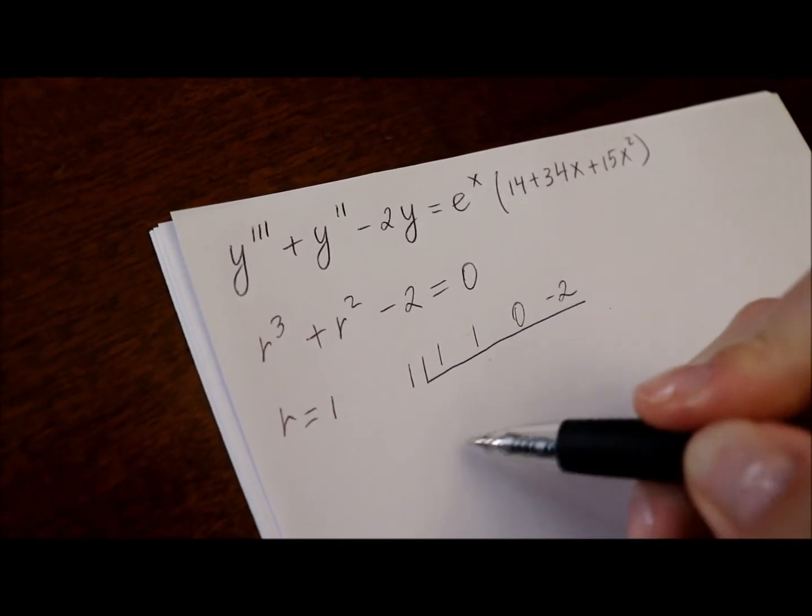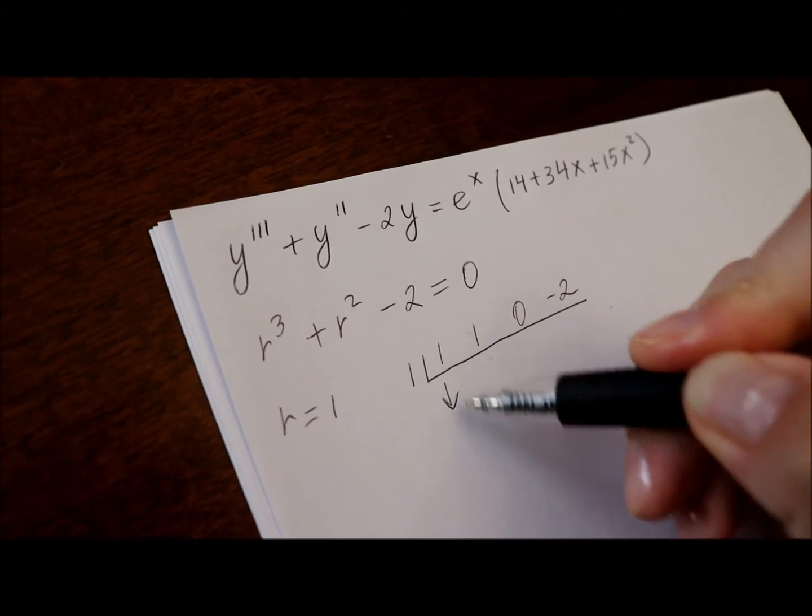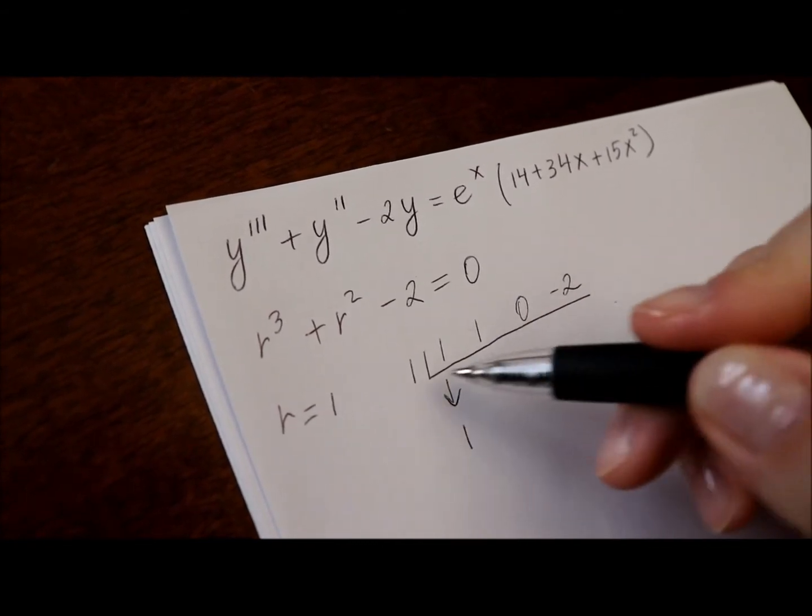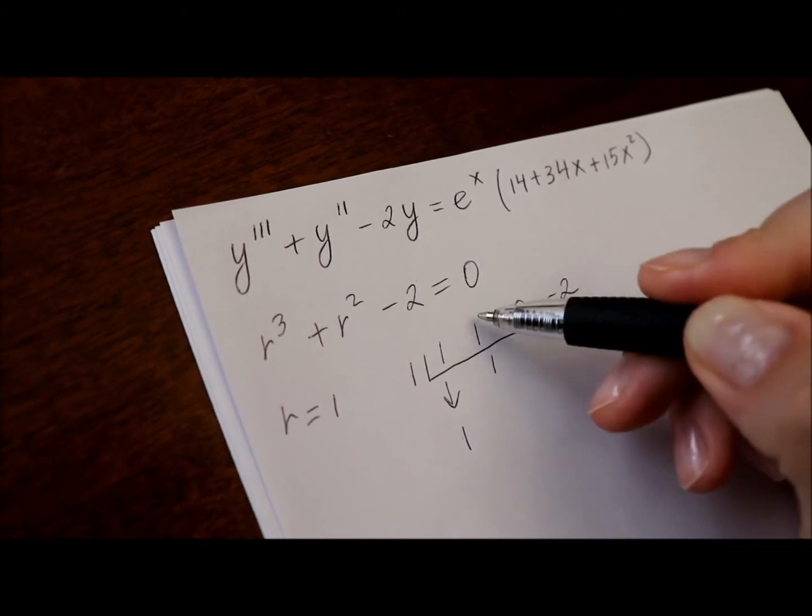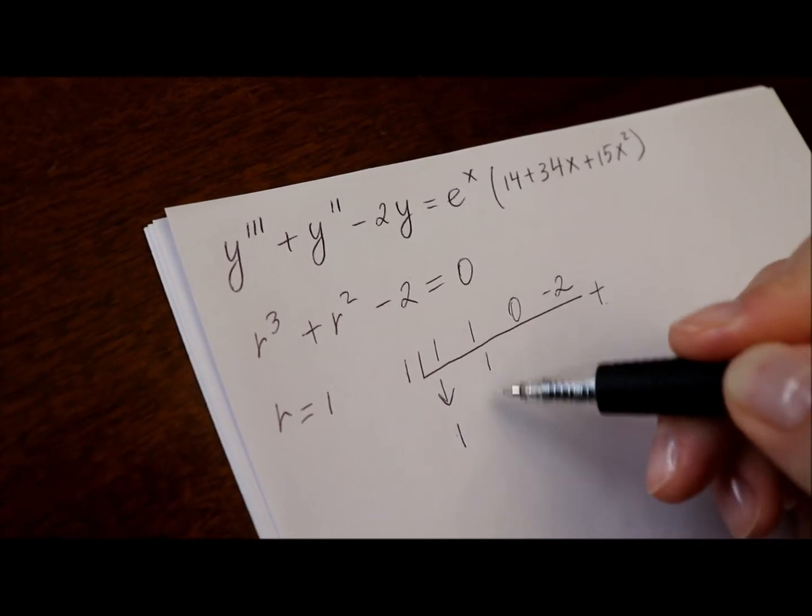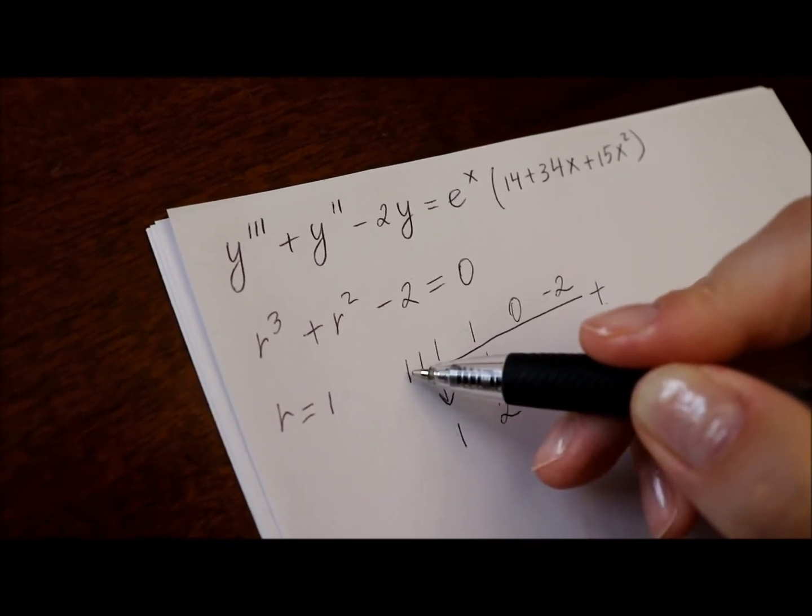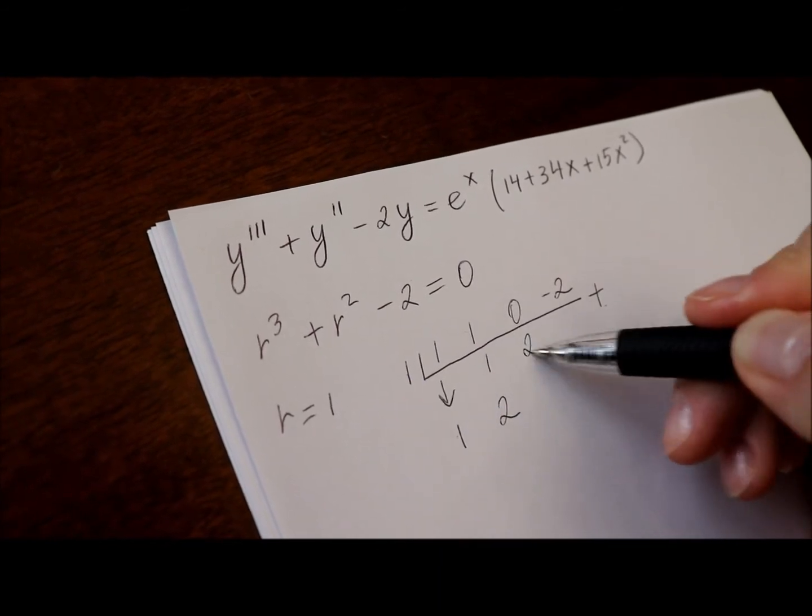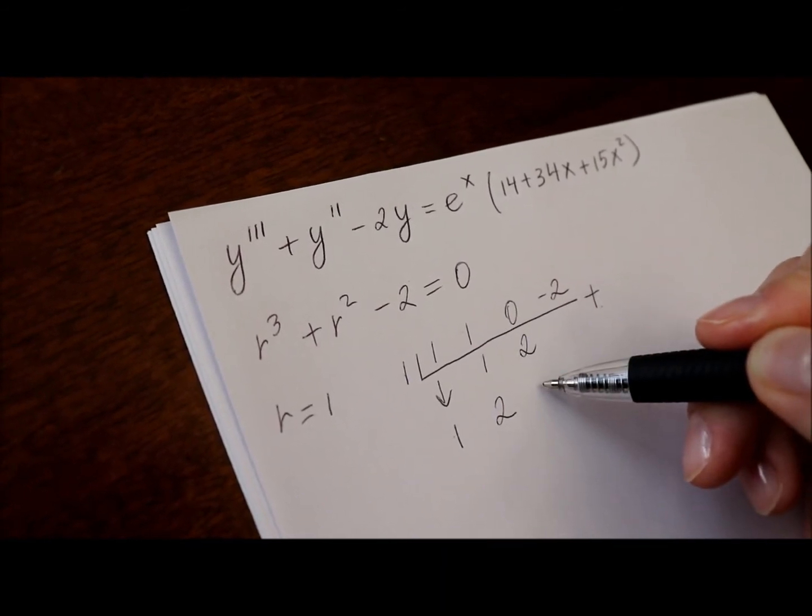Then we fill out two more rows of values. First step, we bring down the first one, then we multiply 1 times 1, 1, and add first and second row. 1 plus 1 is 2. Then we multiply again, 1 times 2 is 2, and add plus 0, 2.